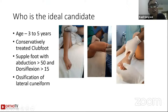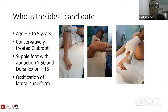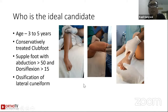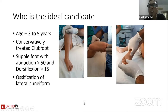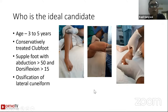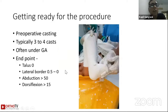The ideal candidate is a child aged three to five years with a conservatively treated clubfoot. The foot needs to be supple with abduction of about 50 degrees and dorsiflexion of more than 15 degrees. By three years you start seeing ossification of the lateral cuneiform, which is the point of tendon transfer, so you need to confirm you can visualize the lateral cuneiform prior to the procedure.